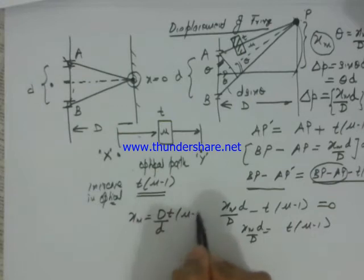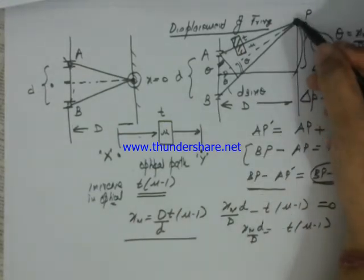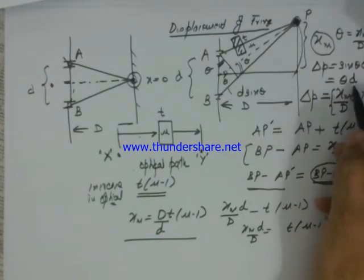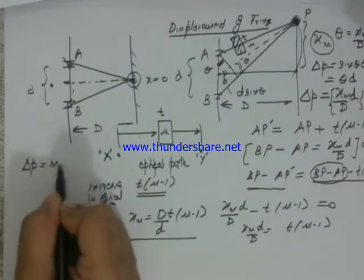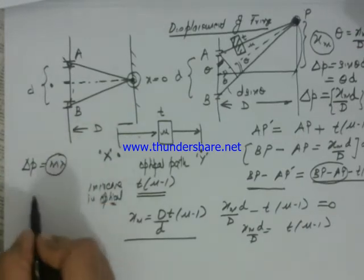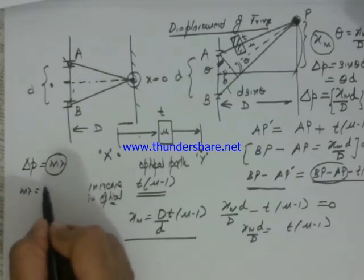This xm was initially some fringe because, based on this path difference delta p being m lambda for the bright fringe, it was m lambda equals xd upon d.